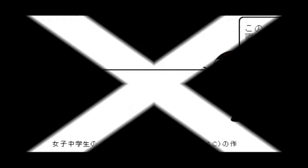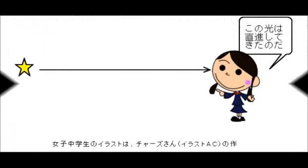問い位置をやってください。光がまっすぐ進むことを光の直進と言いました。人間は光は直進して進むとして見ます。